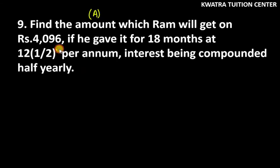Here we have the rate, the principal, and time, but it is in 18 months. So we have to change the rate and account for compounded half yearly. So first of all, let's change the time.